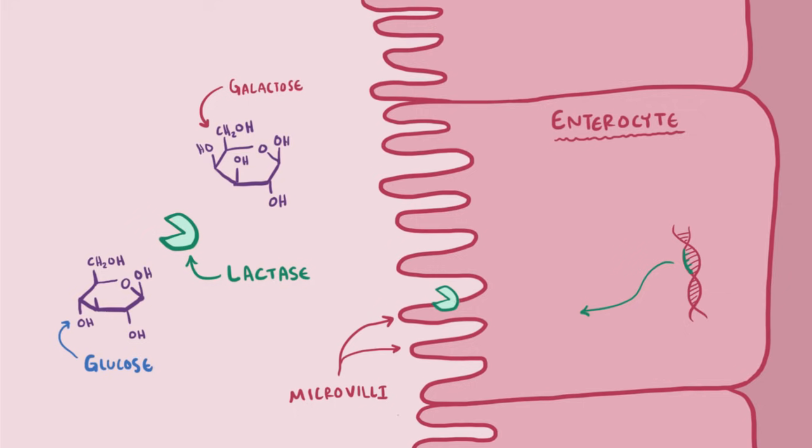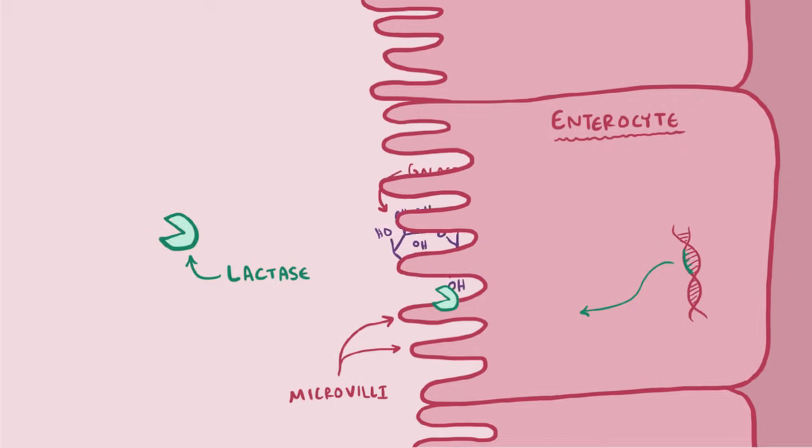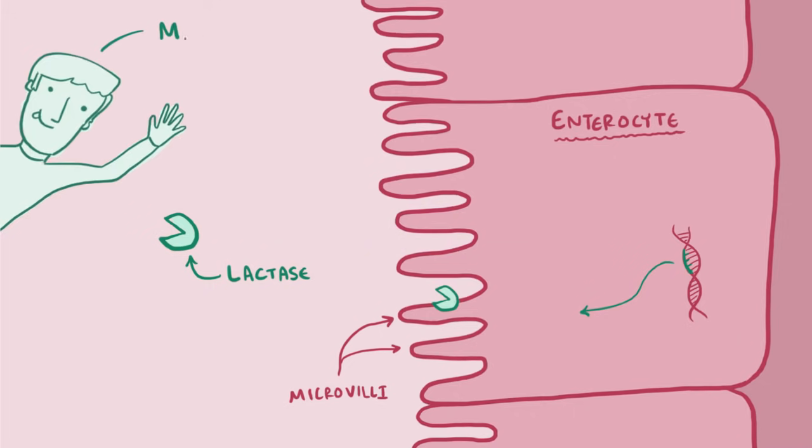Once lactose gets chopped by lactase, we're good to go, and we absorb the glucose and galactose and all is well. Now as mammals, we're wired to be able to ingest milk after birth. So it makes sense that when we're young, we have a whole bunch of lactase enzyme, since that's pretty much all we drink.